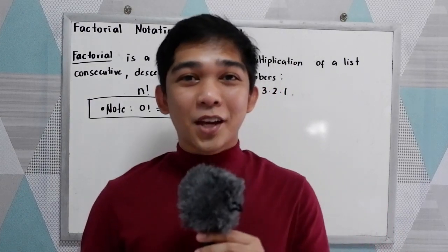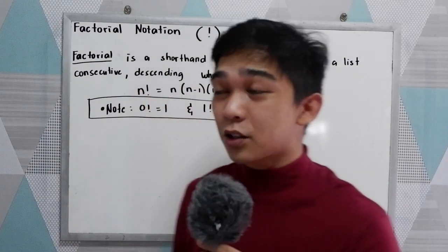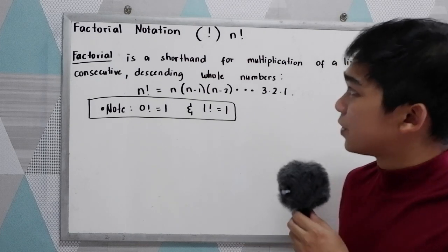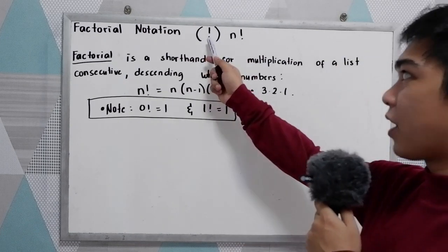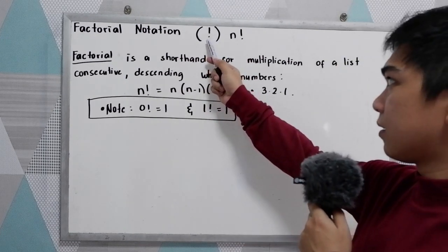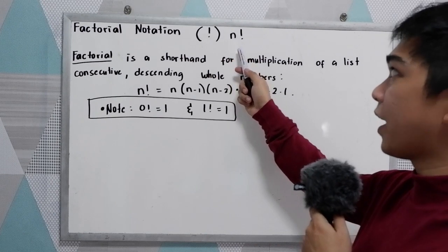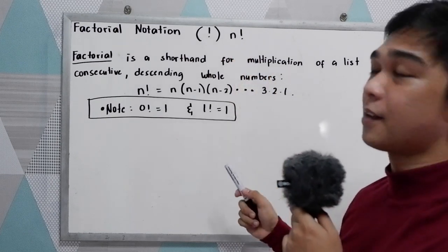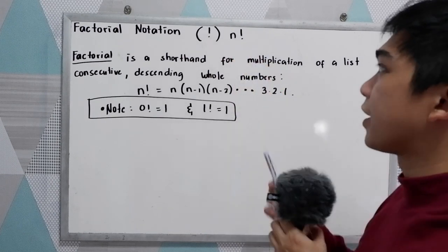Good day everyone. Today I will be discussing factorial notation. This is our symbol for factorial, and this is read as n factorial.